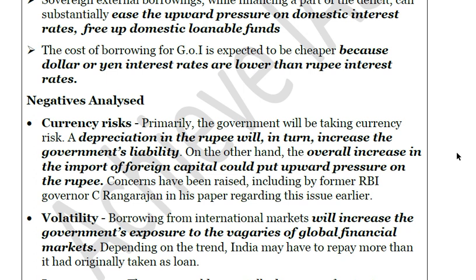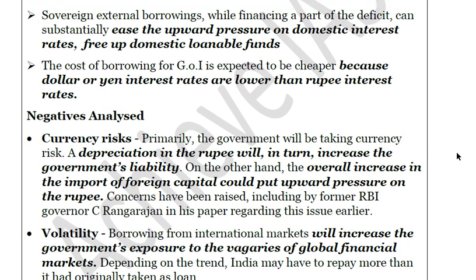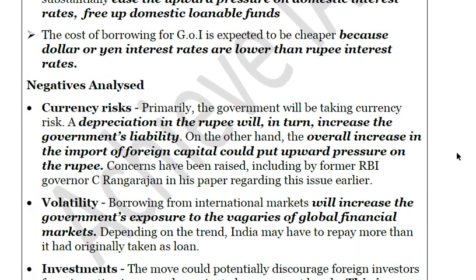This will help ease upward pressure on domestic interest rates and free up domestic loanable funds. Also, the cost of borrowing is expected to be cheaper because dollar or yen interest rates are lower than rupee interest rates. This could open a source from which the government can get loanable funds at a cheaper rate. Now let us look at the negative aspects of this step.